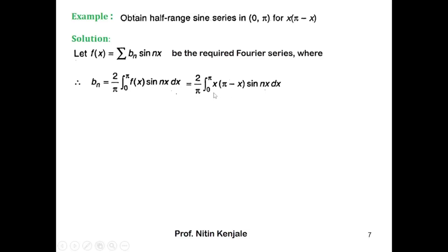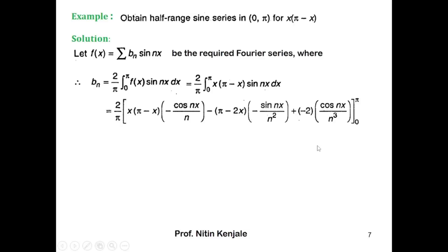We apply integration by parts to evaluate this integral, considering u as x(π − x) and v as sin(nx). After evaluating, we get 2/π times: u as-is times the integral of v — i.e., minus cos(nx)/n — minus the derivative of u, which is (π − 2x), times the integral of that bracket, which is minus sin(nx)/n², plus the derivative of (π − 2x), which is minus 2, times the integral of that bracket, which is cos(nx)/n³. Further terms are zero because the derivative of minus 2 is 0. We complete the bracket with limits 0 to π.